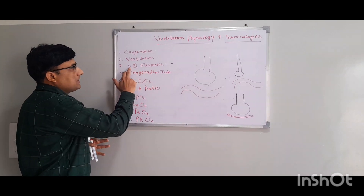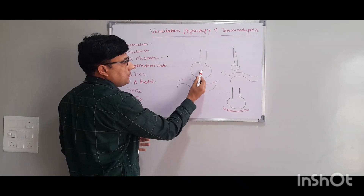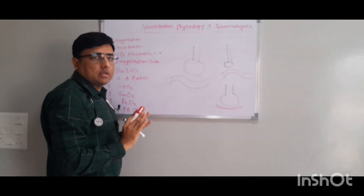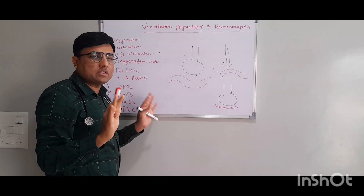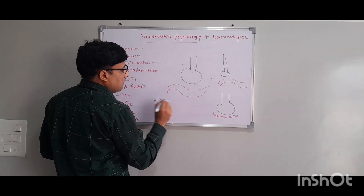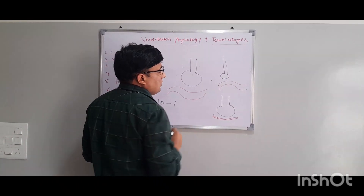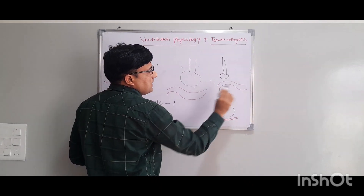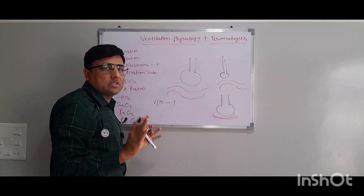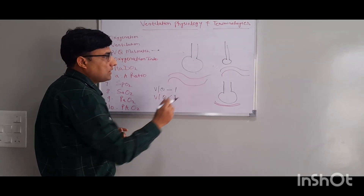Now coming to VQ mismatch, which means ventilation-perfusion mismatch. Gas exchange happens between the alveoli and the pulmonary capillary. If ventilation is adequate and perfusion is also adequate, there is no VQ mismatch — ventilation and perfusion are matching and proper gas exchange occurs; in this case VQ equals 1. However, if the alveolus is collapsed, perfusion is present but ventilation is not, meaning there is a mismatch and VQ will be less than 1. There will not be good gas exchange, and this leads to shunting.